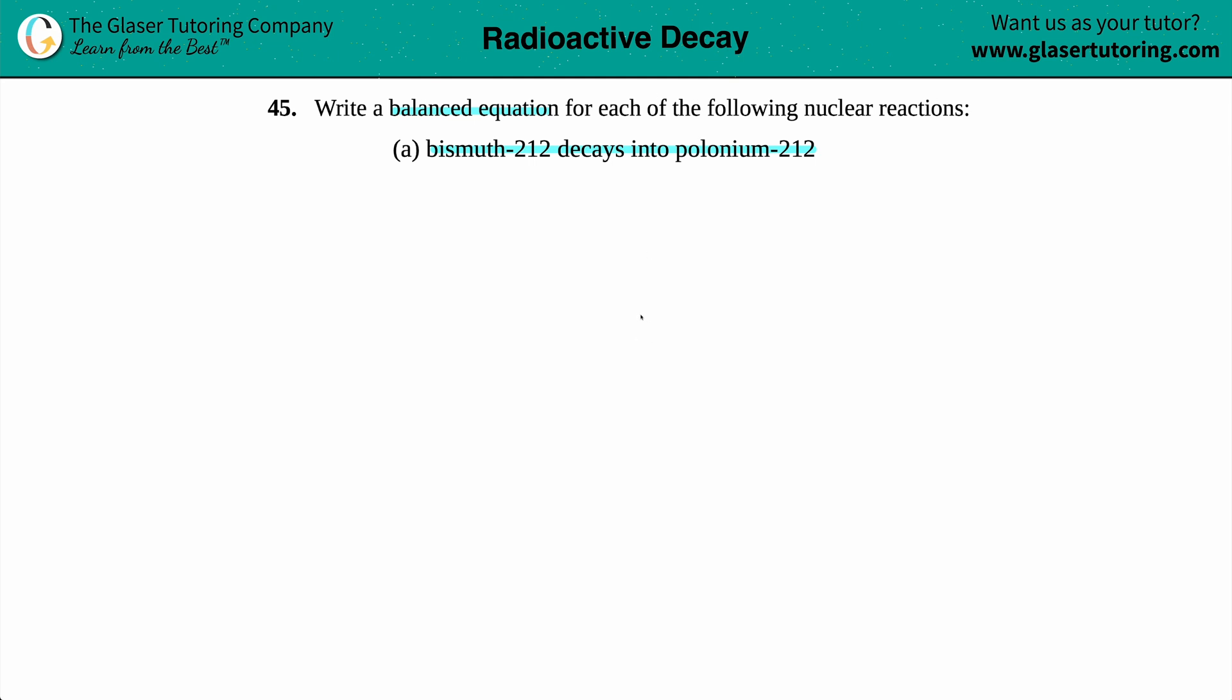Now when we're dealing with nuclear reactions, we're always going to be drawing our balanced equations in the nuclei notation, which means we need those three boxes like this. Let's start from the beginning. They say that bismuth-212 is decaying, so if here is my yield sign, this has to be the bismuth because that's what I'm starting up with. It's decaying into polonium.